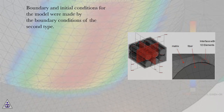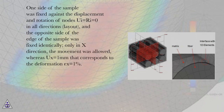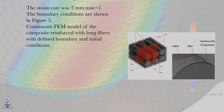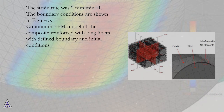Boundary and initial conditions for the model were made by the boundary conditions of the second type. One side of the sample was fixed against displacement and rotation of node UI equals R equals zero in all directions, and the opposite side of the edge of the sample was fixed identically. Only in the X direction was movement allowed, with UX equals 1 millimeter, corresponding to deformation epsilon X equals 1%, at a strain rate of 2 millimeters per minute. The boundary conditions are shown in figure 5.